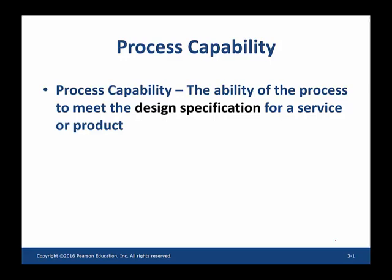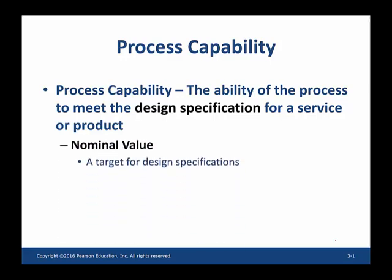Design specification has two things: one is the nominal value and a tolerance. The nominal value is a value that is targeted by a process. A tolerance is an allowance given.